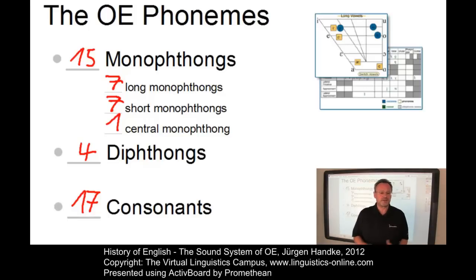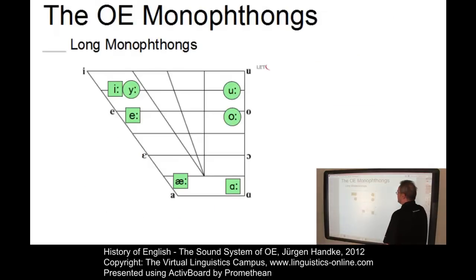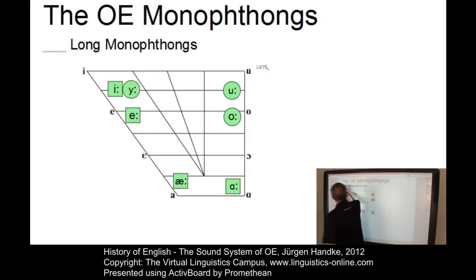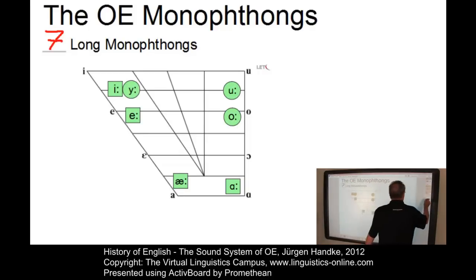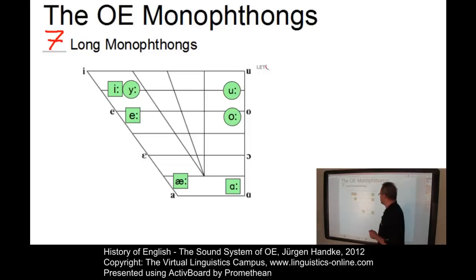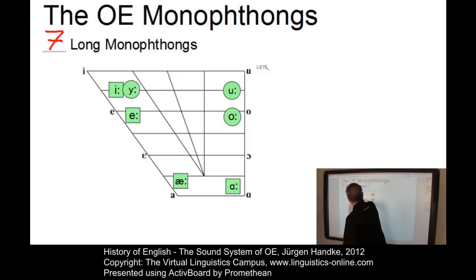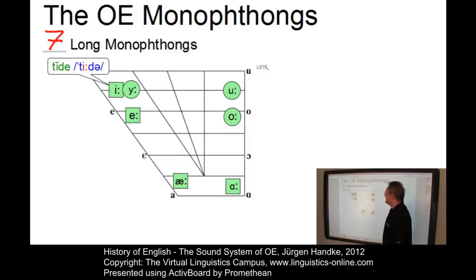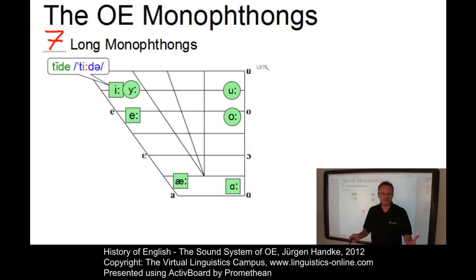Let's look at all phonemes in detail and start with the monophthongs — first of all with the long monophthongs. We already said there were seven long monophthongs in Old English. Here is the first one: 'tīd' — the long Ī as in 'tīd', present-day English 'tide'.